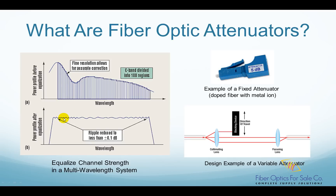Another example is when the received optical power is so strong that it saturates the receiver. You need an attenuator to reduce the power so the receiver can detect the signal correctly.